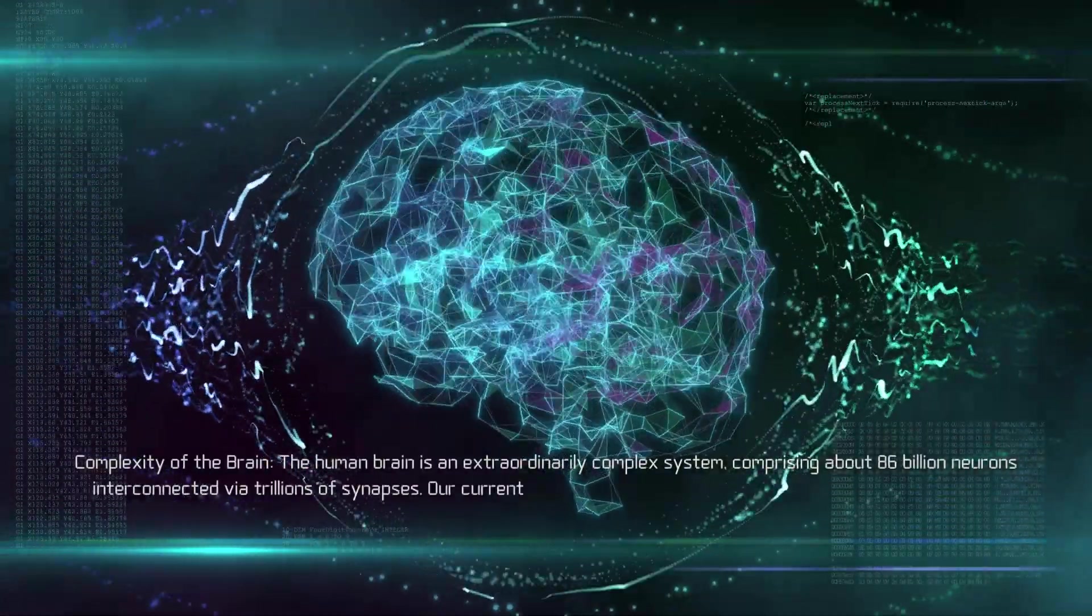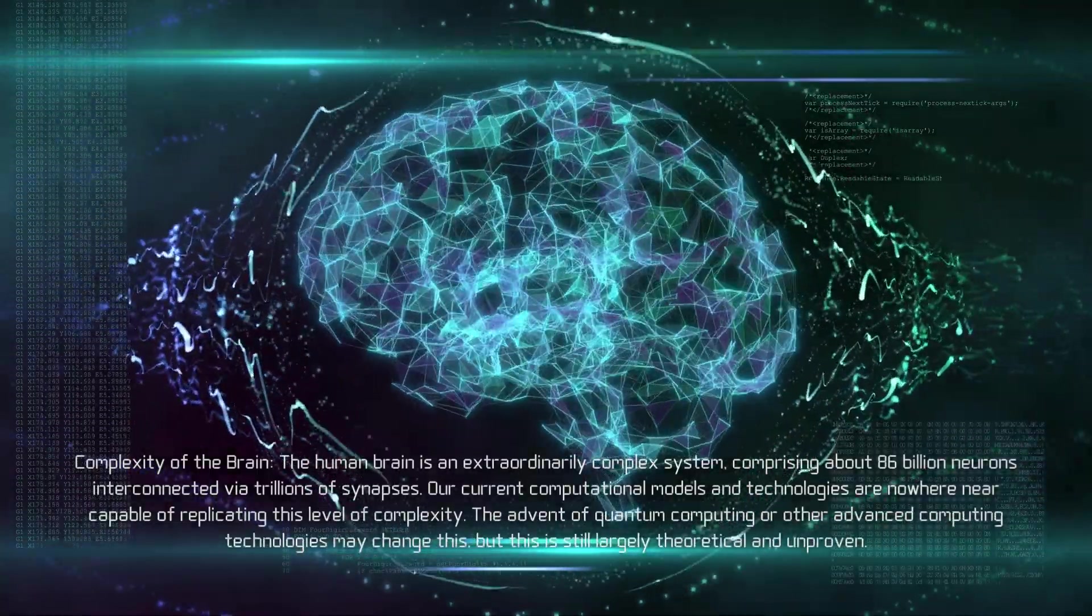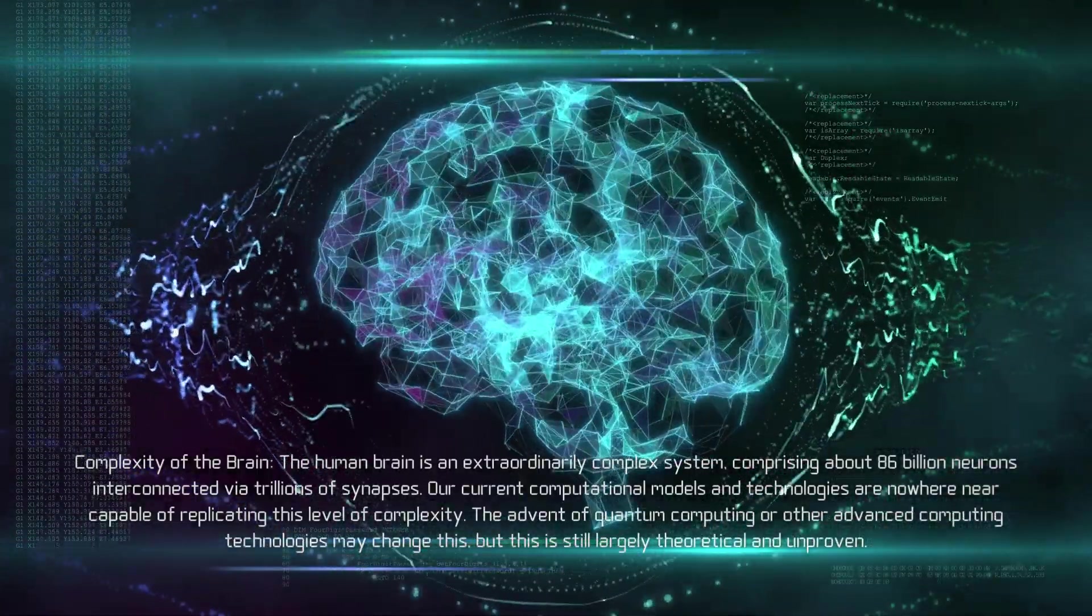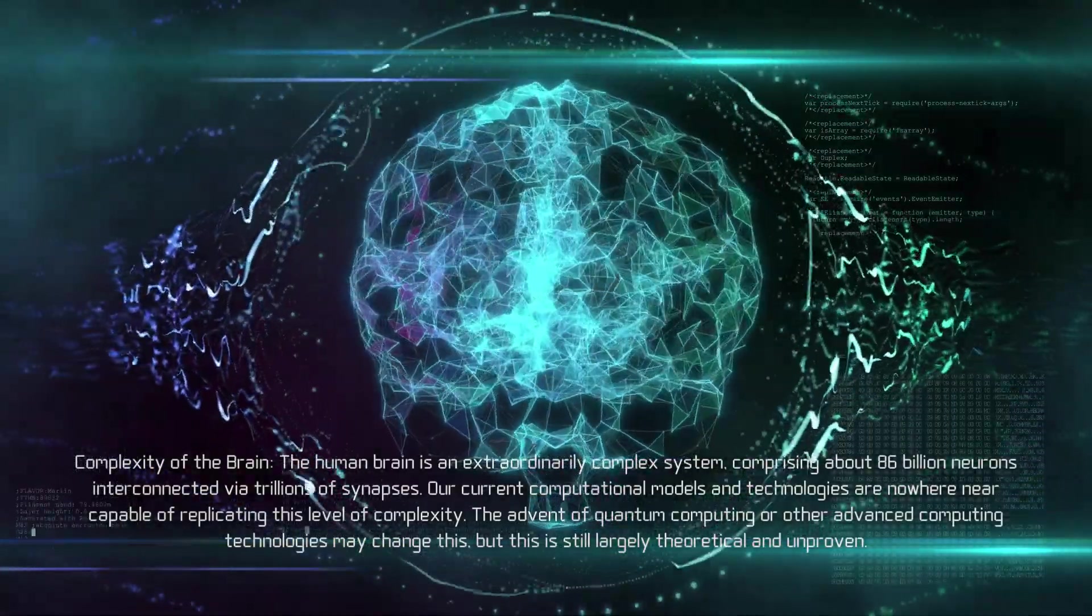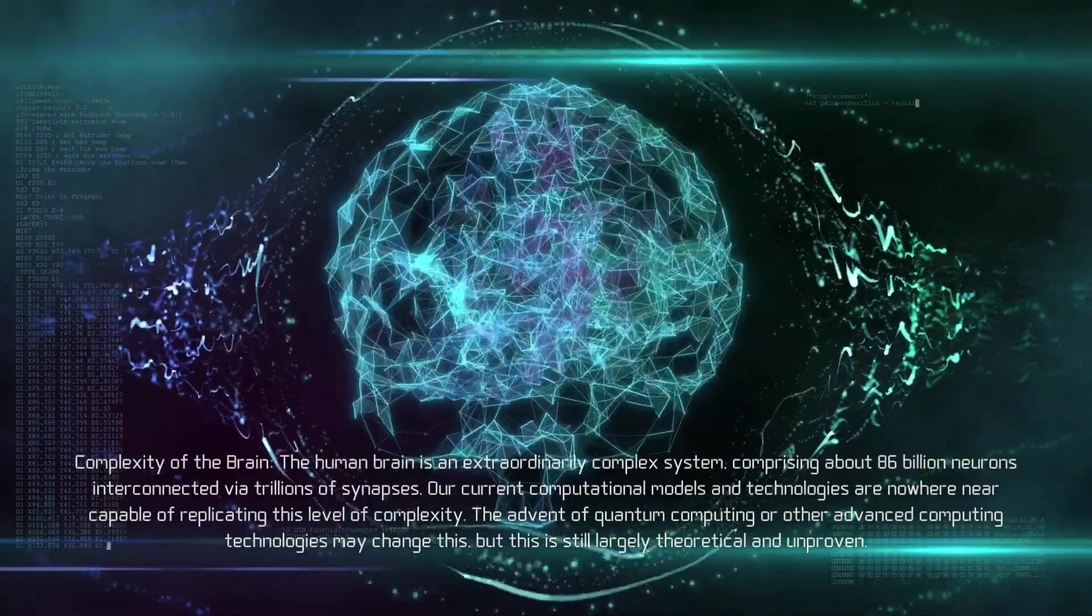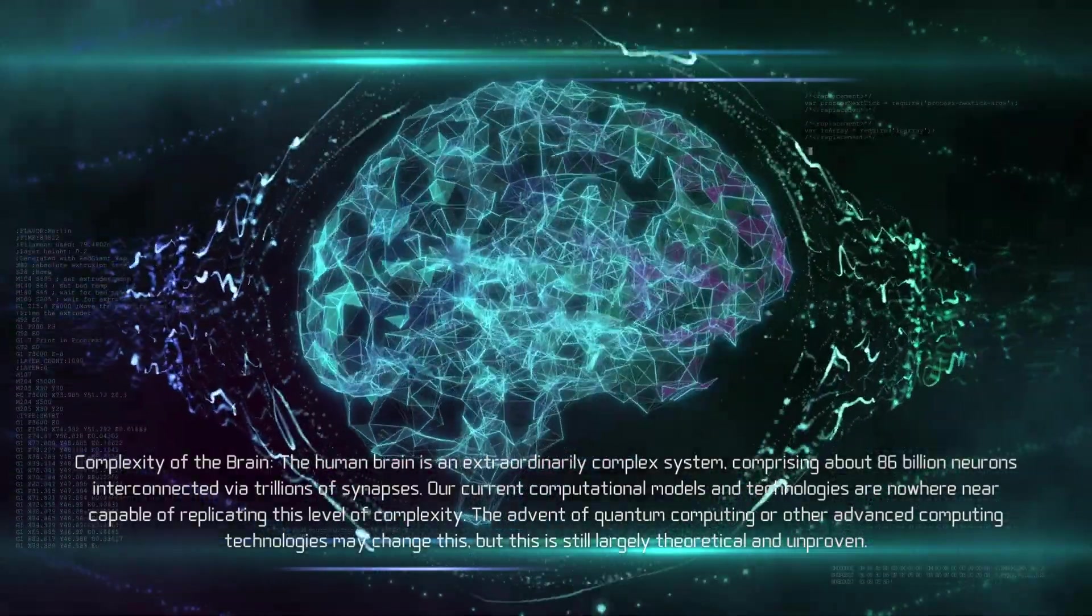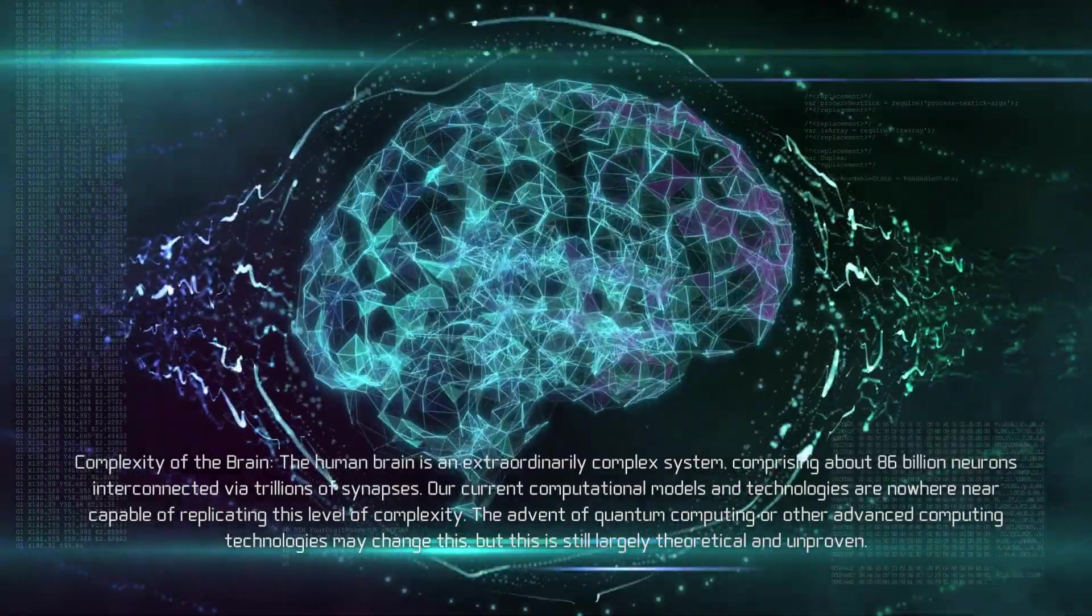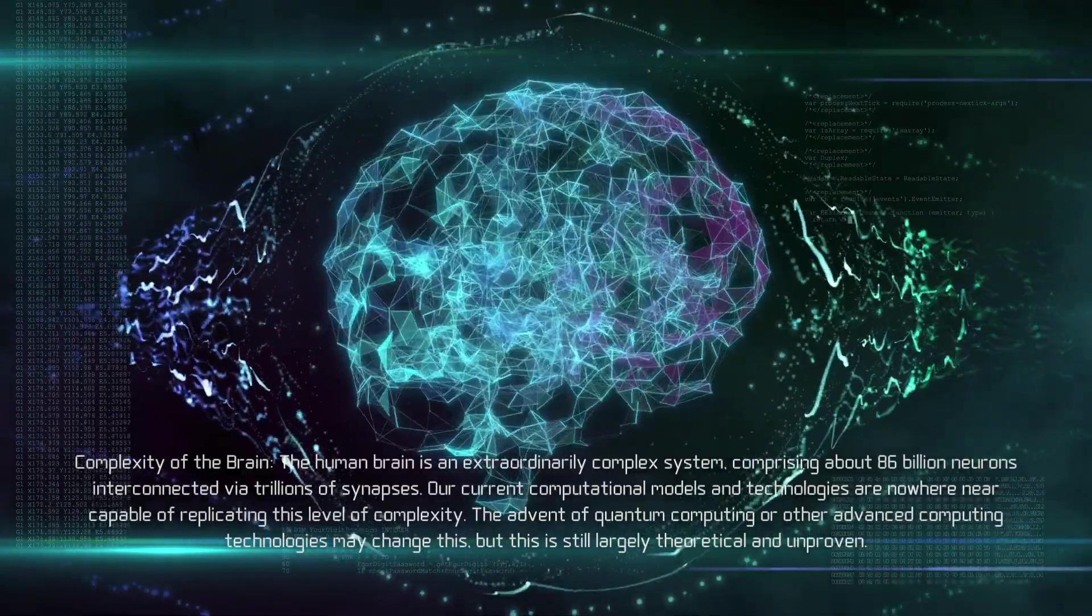Complexity of the brain: The human brain is an extraordinarily complex system comprising about 86 billion neurons interconnected via trillions of synapses. Our current computational models and technologies are nowhere near capable of replicating this level of complexity. The advent of quantum computing or other advanced computing technologies may change this, but this is still largely theoretical and unproven.